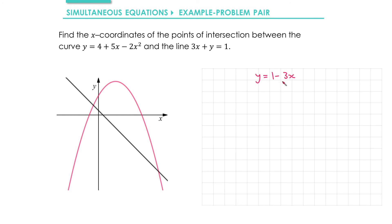Now that they're both of the form y equals something involving x, we can set the two equations equal to each other. So we get 1 minus 3x equals 4 plus 5x minus 2x squared. Let's move everything over to the right hand side. Adding 2x squared, subtracting 5x gives us negative 8x, and then subtracting 4 gives us negative 3.